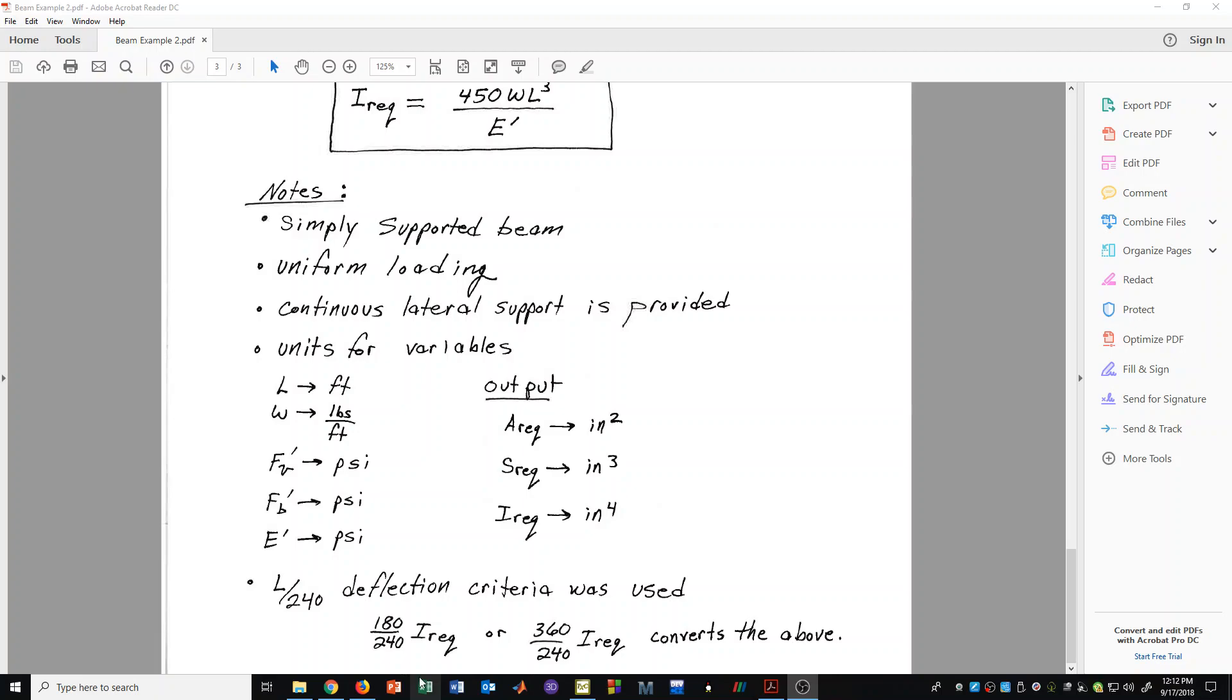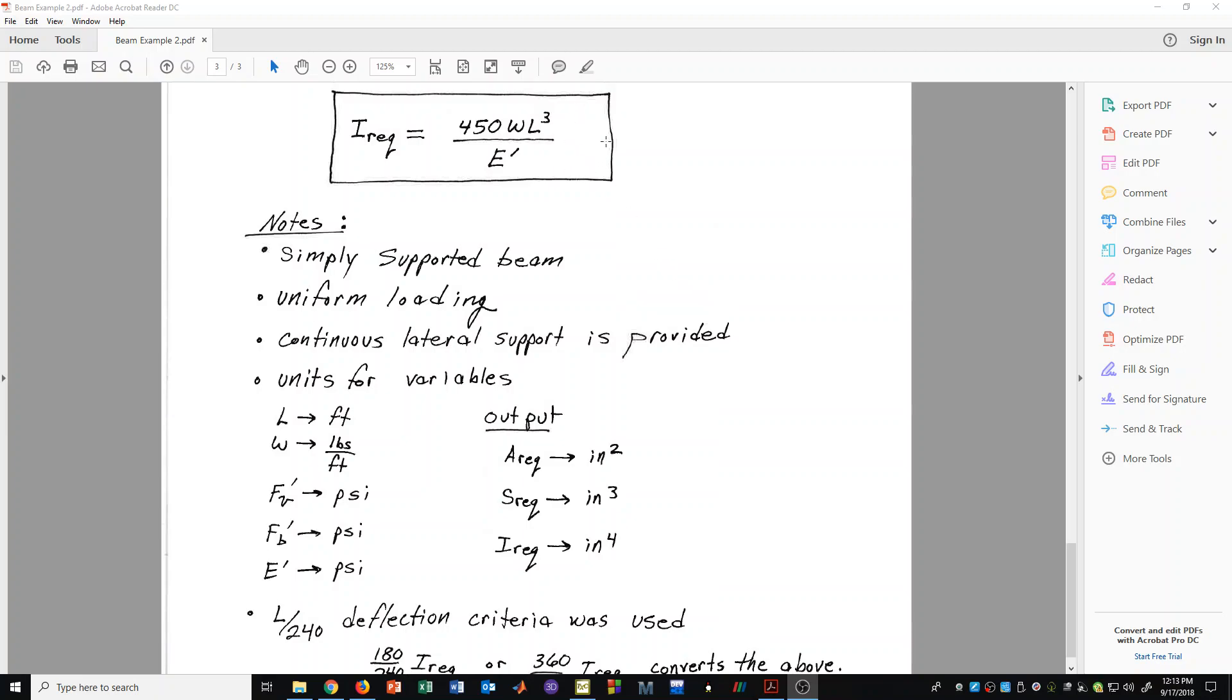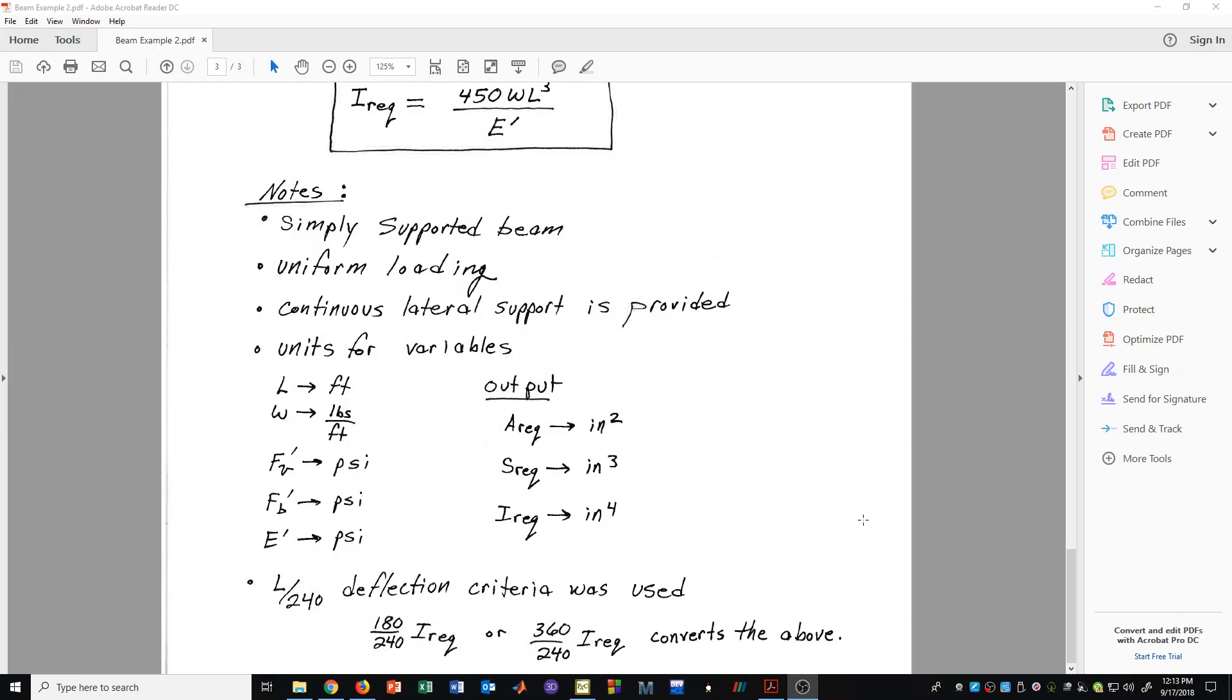If a person wants to use that same formula but for an L over 180 criteria, you would simply use that formula that we already derived and multiply by 180 over 240. If, on the other hand, you wanted to use an L over 360 criteria, you could simply multiply the result of I required by 360 over 240. Hence, it's very easy to modify this last case for other situations. Hopefully that's helpful to you, and as I said in a future video, we will illustrate how to make use of those formulas in an example.